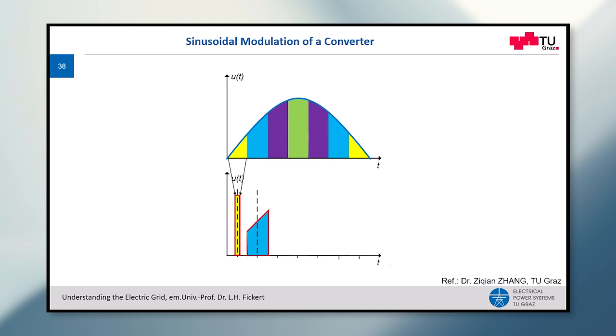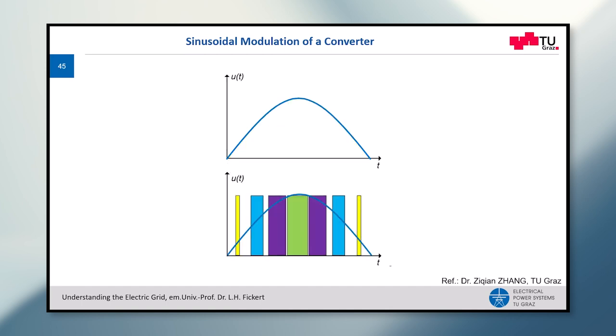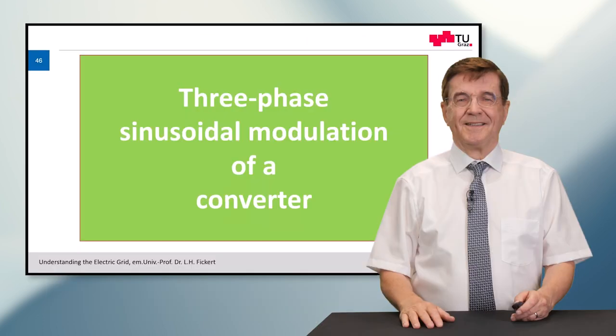But here this area is larger and therefore this shot is longer. And this goes on and on and on. And if you smoothen this output then you see it's sinusoidal again and this is what we want.